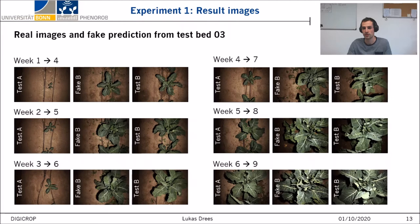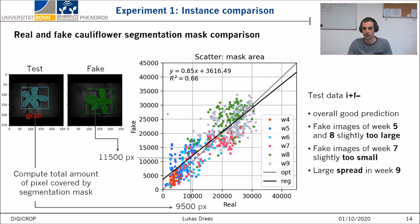If we take these images and apply instance segmentation to them, we can see that cauliflower can be detected with a relatively high degree of certainty on both images. We focus on comparing the segmentation area — the amount of pixels covered by the plant — to check if the predicted plants have the right size. When we scatter all corresponding fake and test areas, we get an impression of how good our generator is. Some weeks are systematically predicted slightly too large, like weeks 5 and 8, and others a little too small, like week 7. Most points are along the grey optimal line with an R-squared value of 0.66, which is not bad.